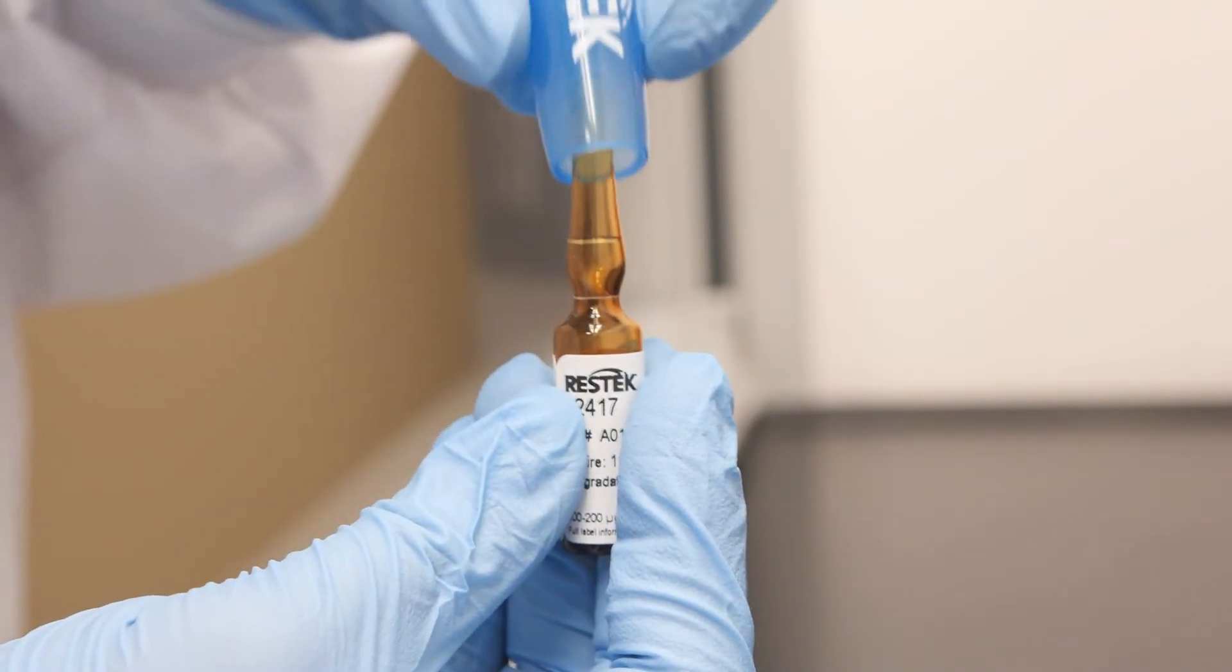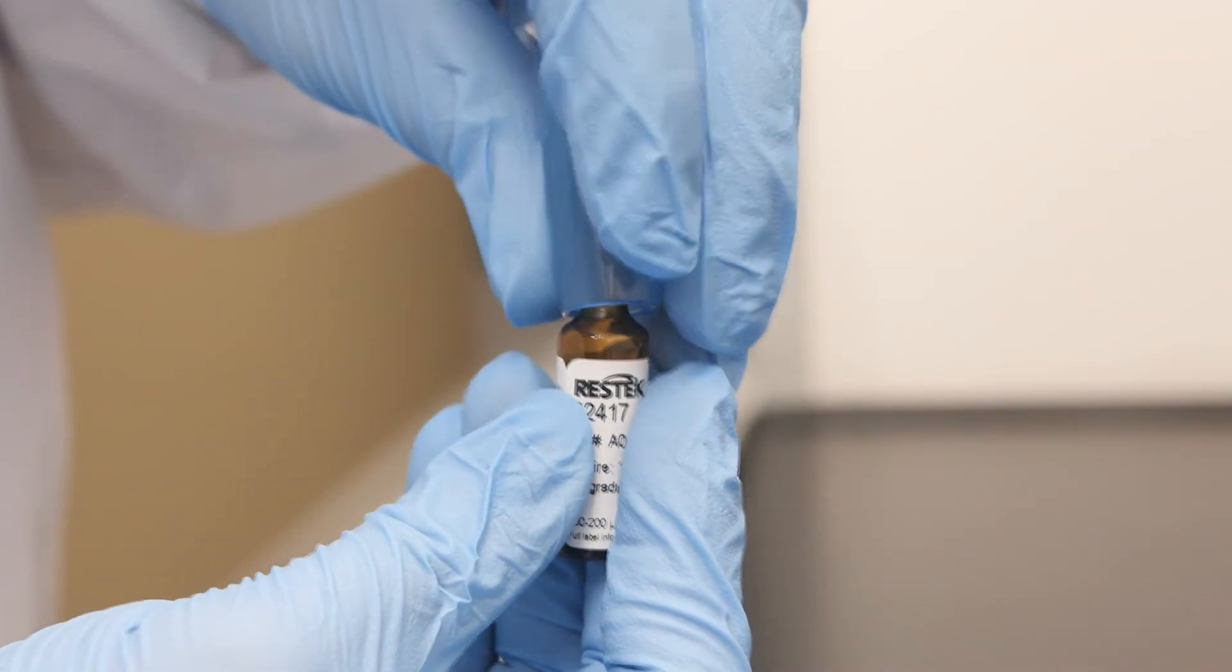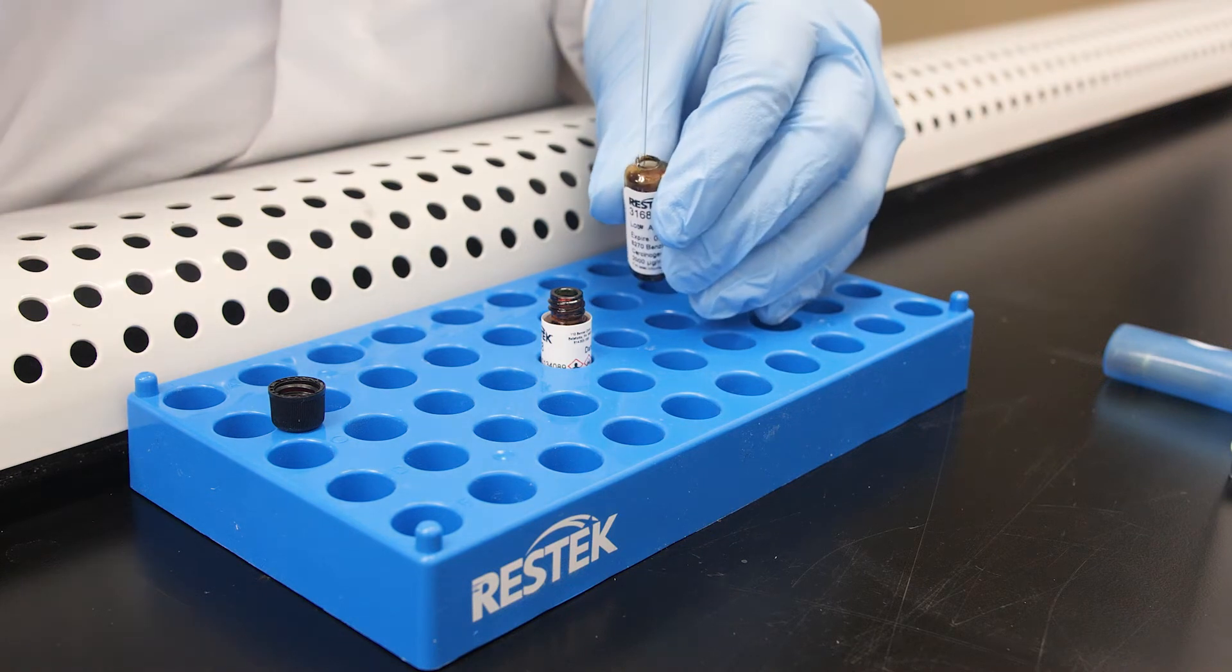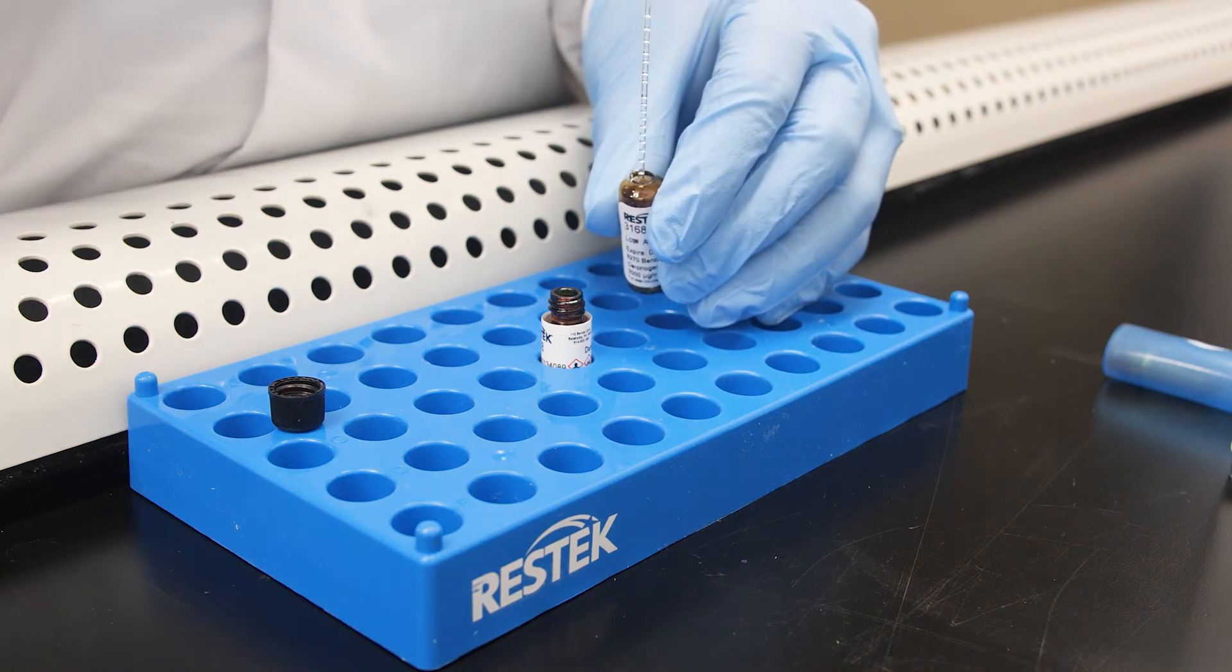Next, use your ResTech safecracker to open the ampoule. In order to do this, slide the safecracker over the ampoule tip until it reaches the score line on the neck. While holding the ampoule in one hand, pull the tip toward you with the other hand. You can then transfer the contents into an appropriate vial using a pipette.